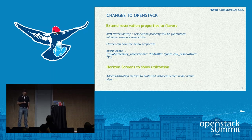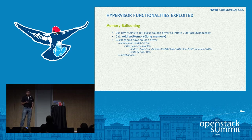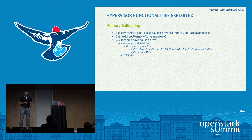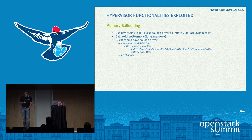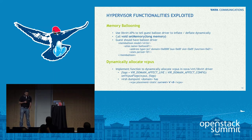We've added Horizon screens to show actual utilization. The hypervisor functionality we've exploited is memory ballooning — this has existed for a long time but there was no code in the Nova LibVirt driver to utilize it. The set_memory call actually allocates the required memory to the VM, provided the VM has a balloon driver. By default, most images will have this balloon driver. We've also used the set vCPU flags function to dynamically allocate CPUs. The current vCPU, equal to 4, comes from the flavor reservation — that's what gets allocated to the VM — whereas the upper bound is 8.